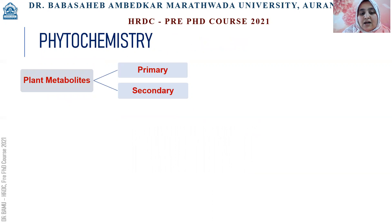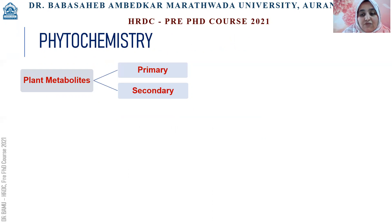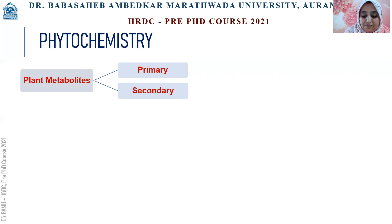Phytochemicals are grouped as primary metabolites and secondary metabolites. Primary metabolites are the chemicals which have a definite role in metabolism; they are essential for growth, development, and reproduction. Secondary metabolites are derived from primary metabolites. They are very complex in nature and have various functions like chemical adaptations to environmental stress, with some acting as defensive chemical agents against pests.